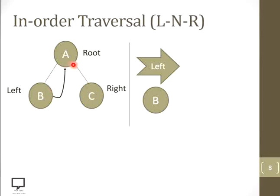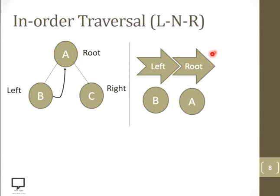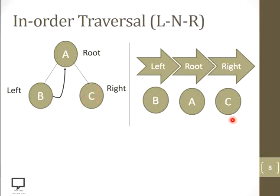Now let's complete the in-order traversal. After returning back to the root node, our next step is to traverse the root node, and then the last step is to go to the right child. A's right child is C, so I am displaying it. In this way, the in-order traversal of the given binary tree is B, A, C — where left child is B, root node is A, and right child is C.